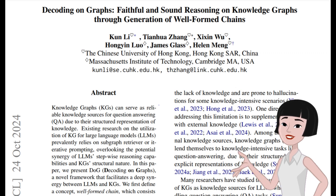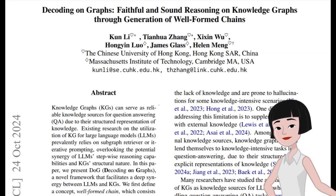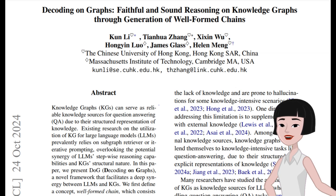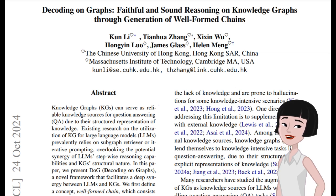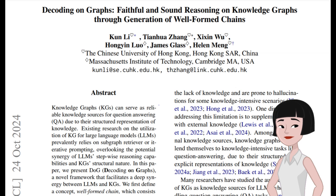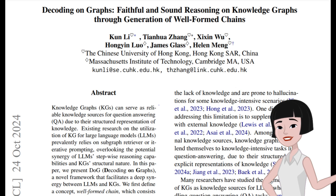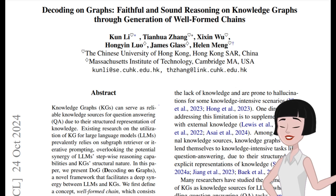This paper dissects DOG's workings, explaining how the model constructs logical reasoning paths to reach accurate answers. Through a method of knowledge-grounded chains and constrained decoding, DOG uses the knowledge graph as a structured guide to tackle complex queries with minimal guesswork. This framework is at the forefront of a shift, moving AI from pattern recognition to deeper reasoning.